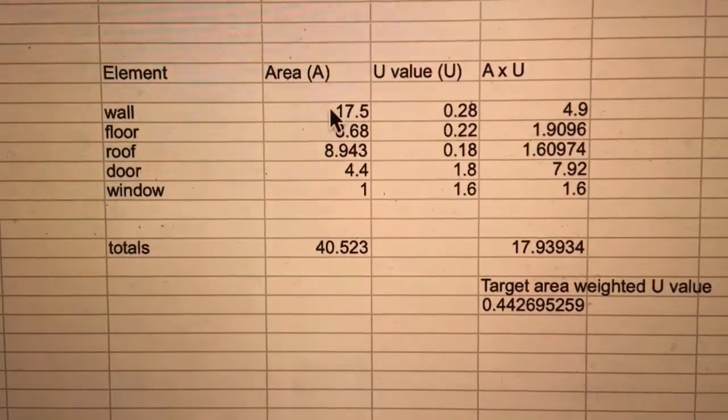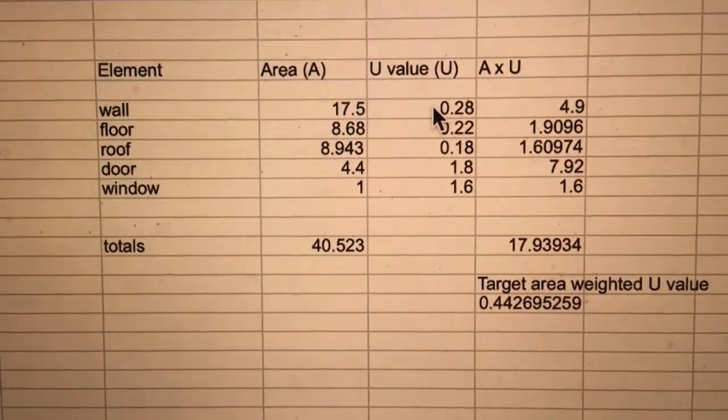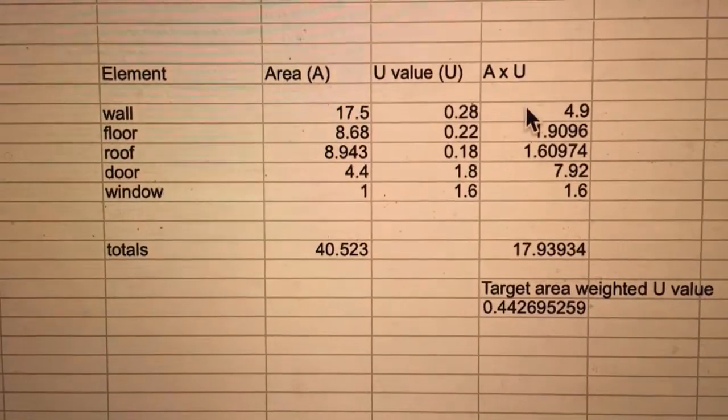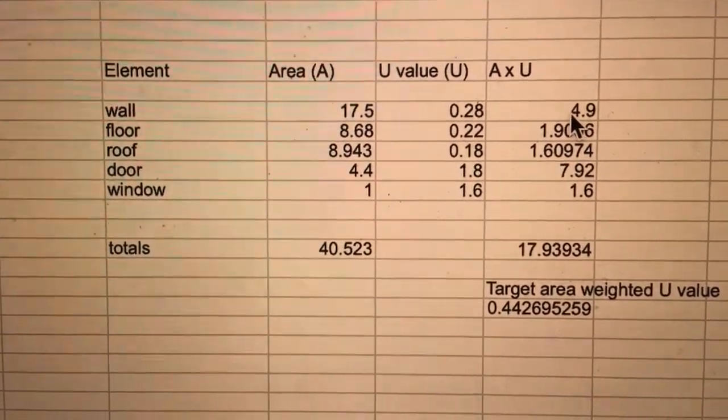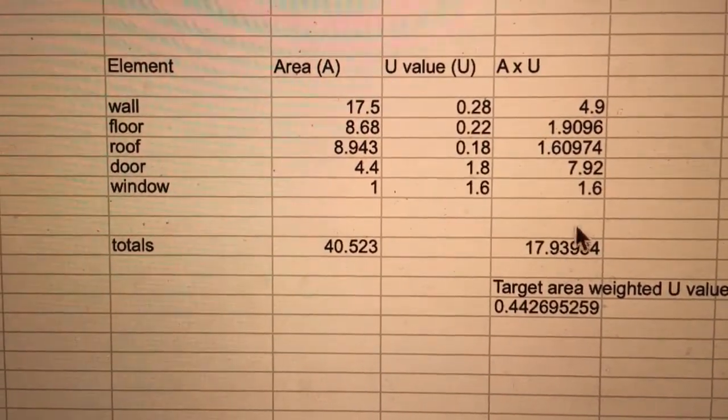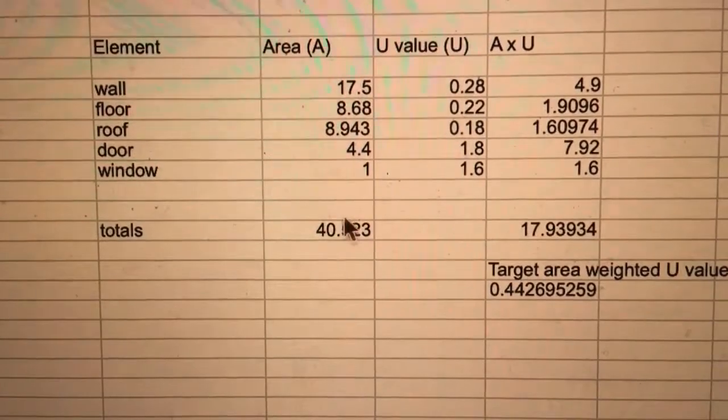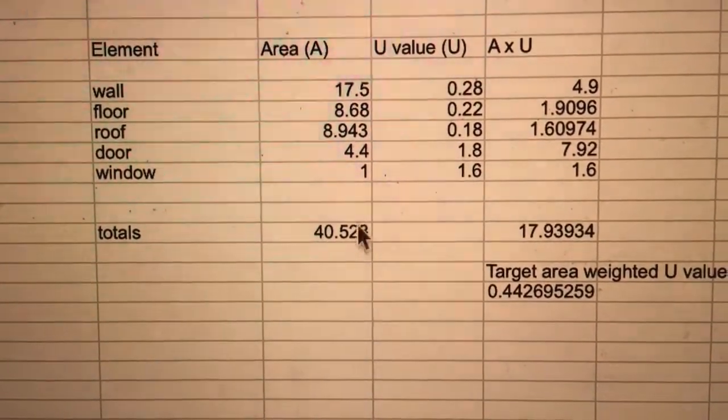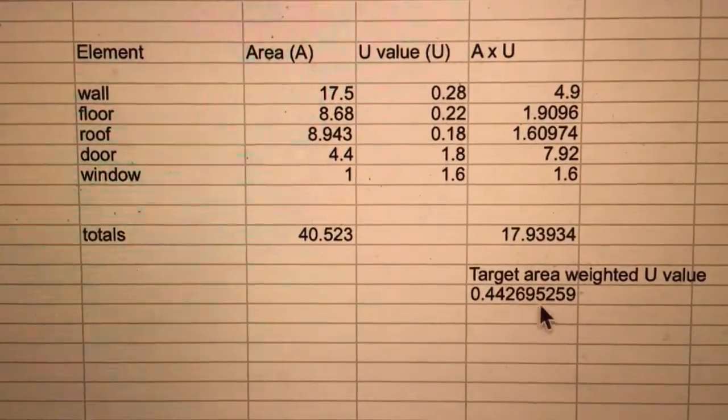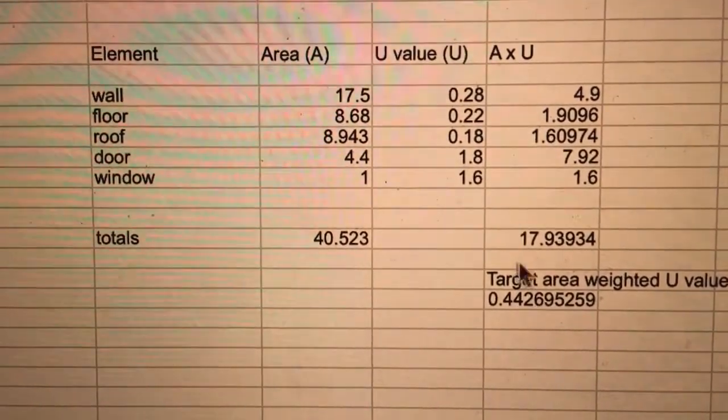So, for the wall, there's an area of 17.5m of wall. It has a u-value of 0.28 and a times u is 4.9. The total of a times u is this figure here. And when I divide the total by the total area, I get the target area-weighted u-value. 0.44. So that's the number I have to beat.